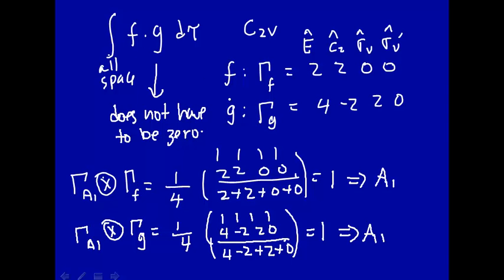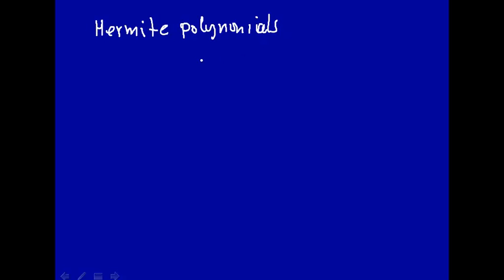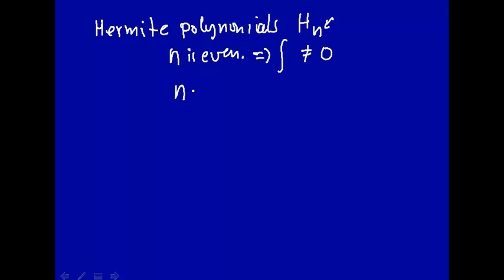If we had projected out A1 from f and g and found that neither contains any A1, then this integral would have to be zero. We've already had an example of symmetry applied to integrals: remember the Hermite polynomials, characterized by quantum number n. If n is even, the integral is not equal to zero. However, if n is odd, the integral of that Hermite polynomial over all space is equal to zero.